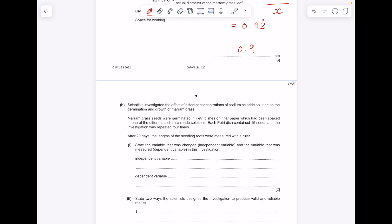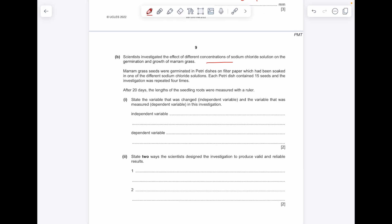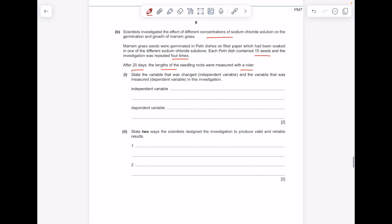Scientists investigated the effect of different concentrations of sodium chloride solution on the germination and growth of marum grass. Marum grass seeds were germinated in petri dishes on filter paper which had been soaked in one of the different sodium chloride solutions. Each petri dish contained 15 seeds. The investigation was repeated four times. After 20 days, the lengths of the seedling roots were measured with a ruler. State the variable that was changed. The independent variable and the variable that was measured, the dependent variable. So just read back through the wording of the question. Scientists investigated the effect of different concentrations of sodium chloride solution. So that is what they are changing. What are they measuring? Well, they're measuring the length of the roots, they've said.